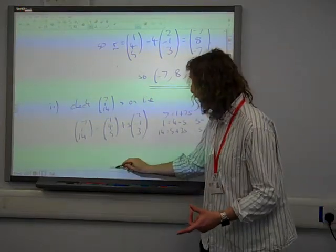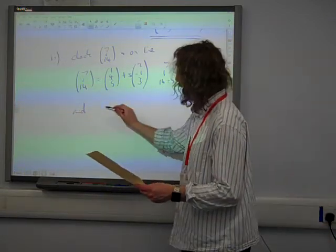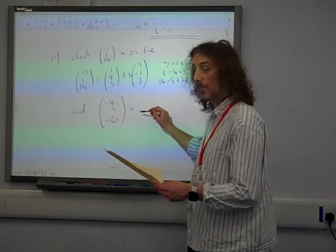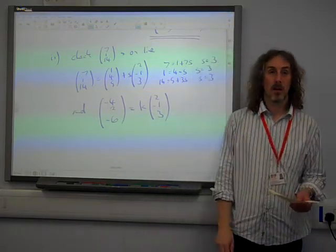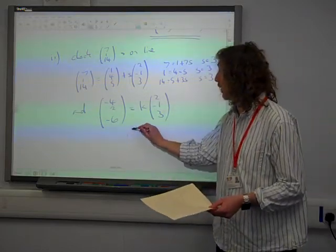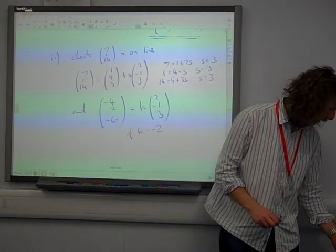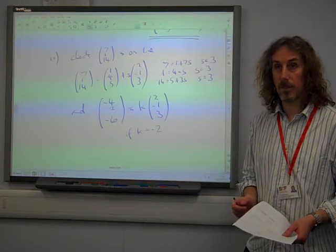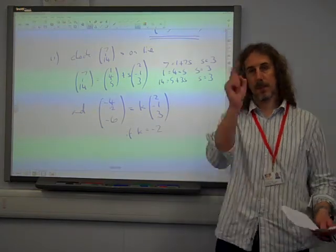We now need to show that the direction vector of this new equation that we've been given is there. Say, minus 4, 2, minus 6. Does that equal something times 2 minus 1, 3? Well, it does, doesn't it? And if k is equal to minus 2, then it's the same equation. And that's what we needed. We needed to show that it was parallel to it. And not only parallel to it, it also went through a point that was on that line. That's it.